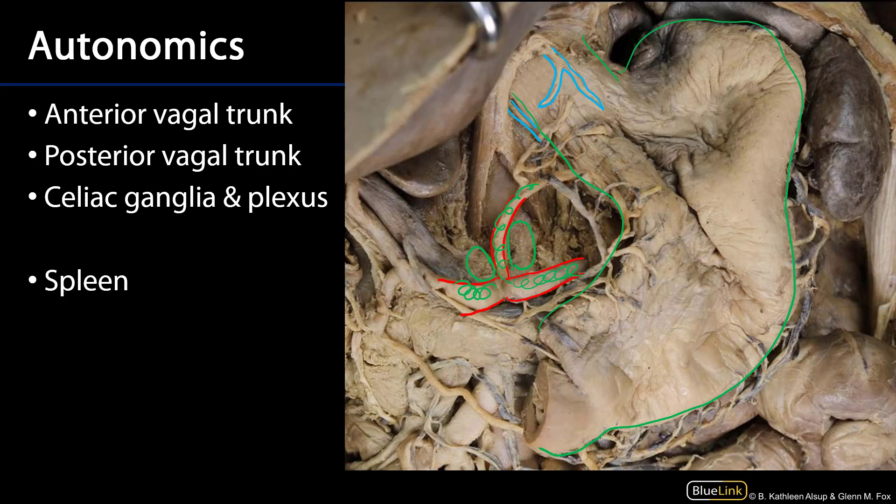We've discussed the abdominal part of the esophagus, the stomach and its features, as well as some of the autonomics that pertain to the foregut. Thank you very much for your time.